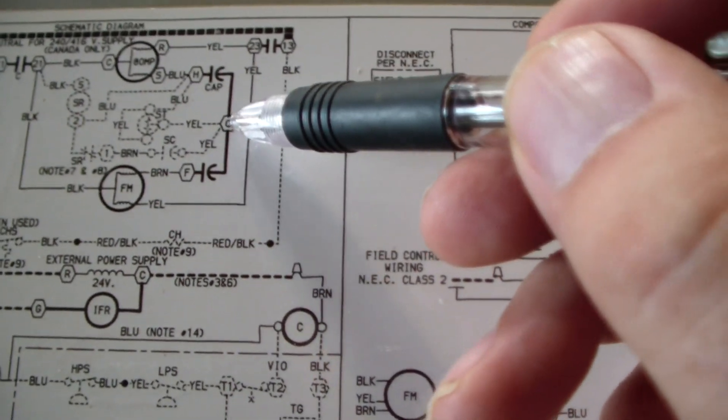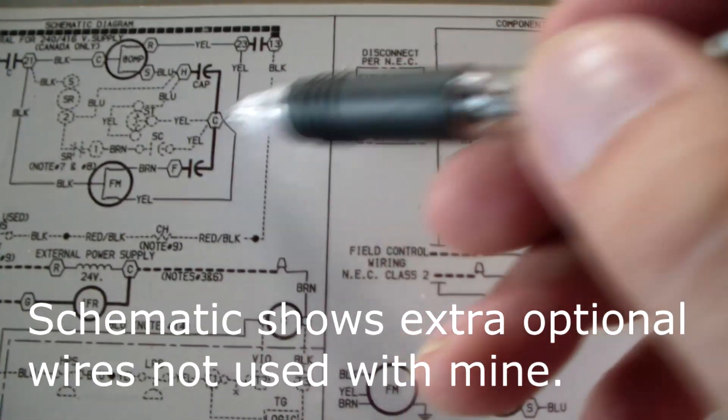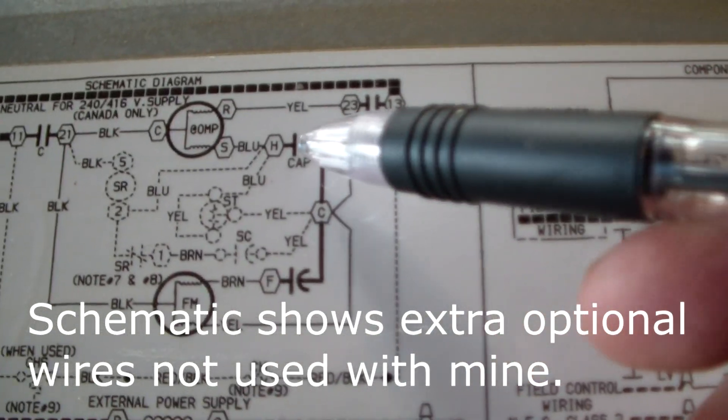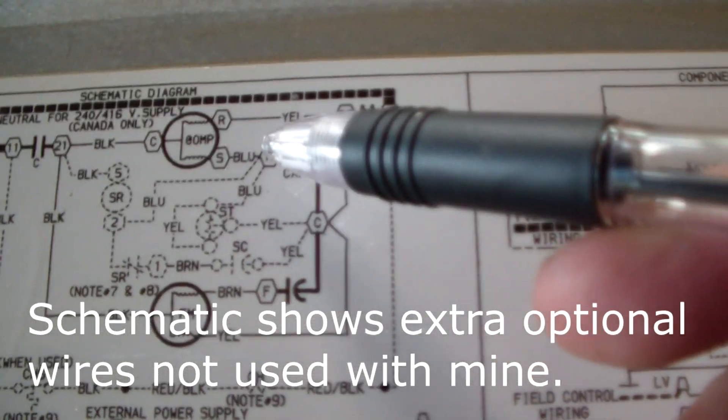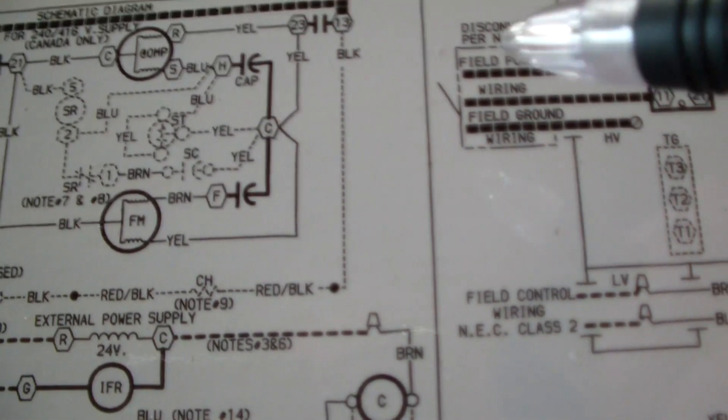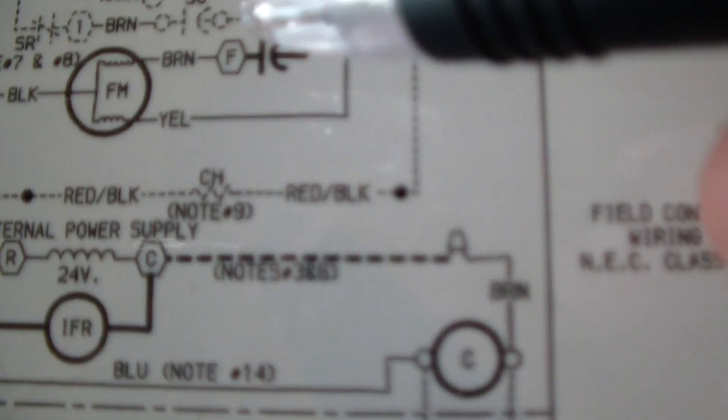And you can see that there's a C. It looks like it has four yellow wires on the C. And then going up, we have the H. Looks like it has three blue wires going to it. And then at the bottom, we have the F.